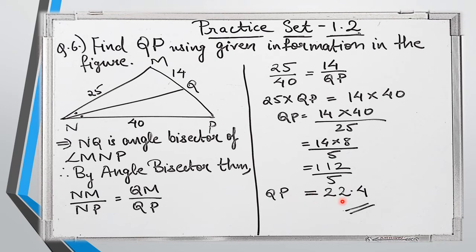Whenever you find that an angle bisector is involved in the diagram, we will use either the angle bisector theorem or the converse of it. What is important is to keep revising the statements of all the theorems we learned: the basic proportionality theorem, the angle bisector theorem, the converse of both, and the property of three parallel lines and transversals. Once you understand those statements, the whole practice set becomes simple.